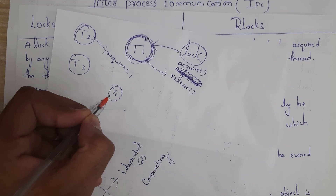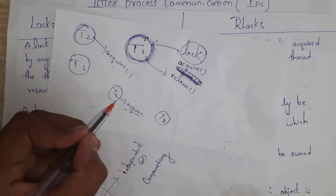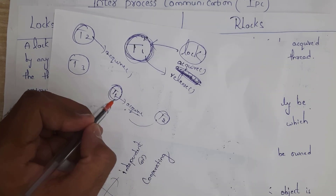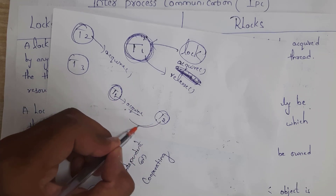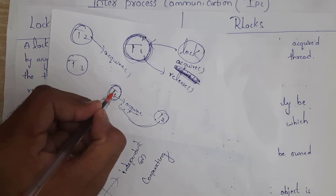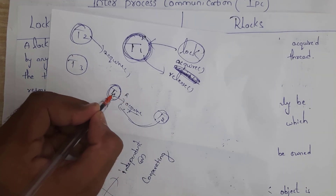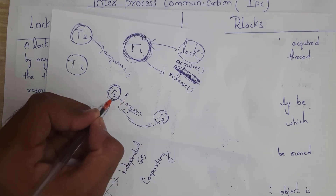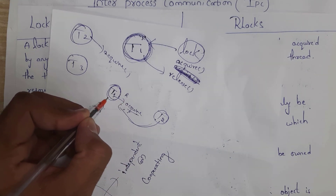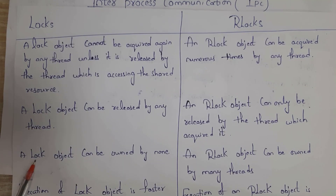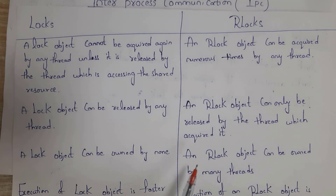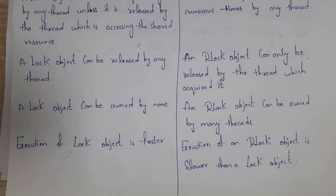For example, if thread T1 acquired a Lock, this lock can be released by T1 or any other thread such as T2. But if thread T1 acquired an RLock, only T1 should release that lock. This is the difference between Lock and RLock. A Lock object can be owned by none, and an RLock object can be owned by many threads. Execution of Lock is faster, whereas execution of RLock is slower compared to Lock. These are the differences between Lock and RLock.